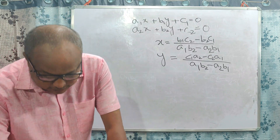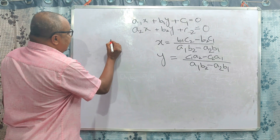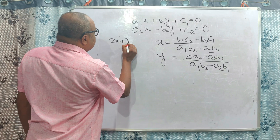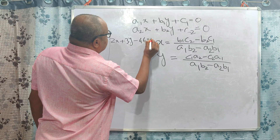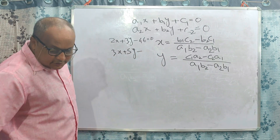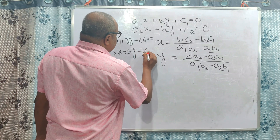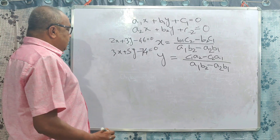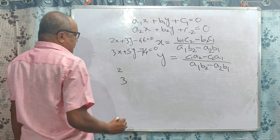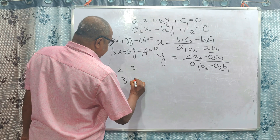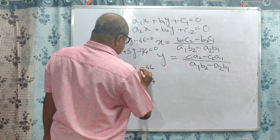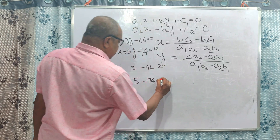Now let us take an example: 2x plus 3y minus 46 is equal to zero. The second equation is 3x plus 5y minus 74 is equal to zero. In this case, A1 is 2, A2 is 3, B1 is 3, B2 is 5, C1 is minus 46, and C2 is minus 74. Again, A1 is 2, B1 is 3.